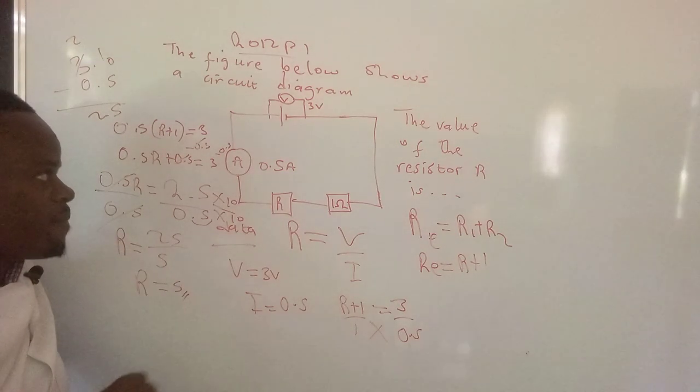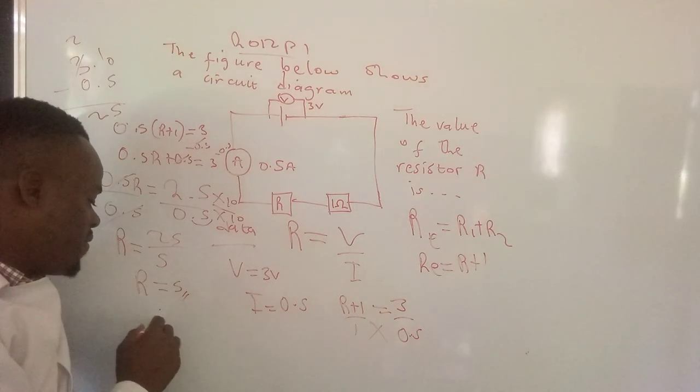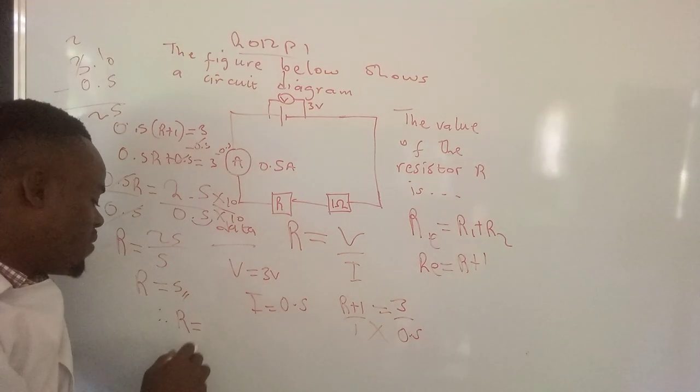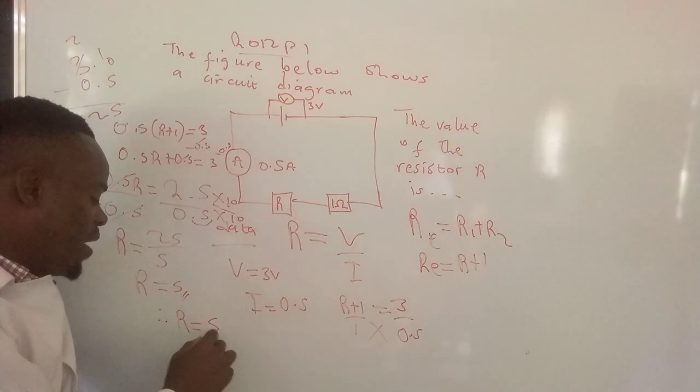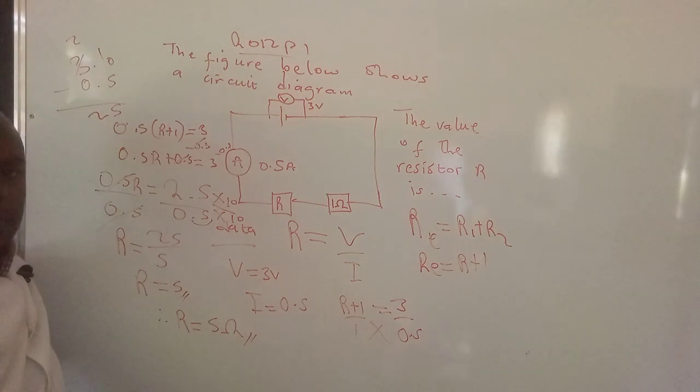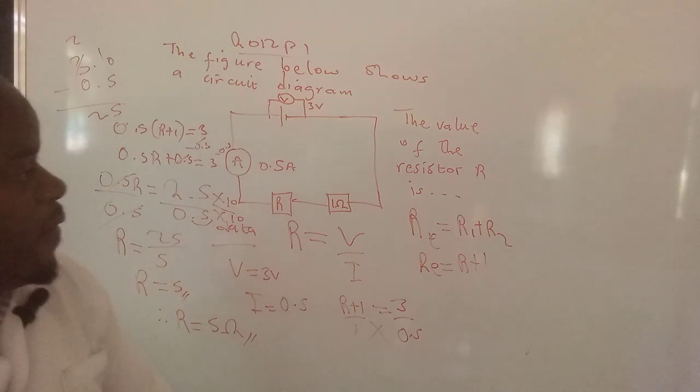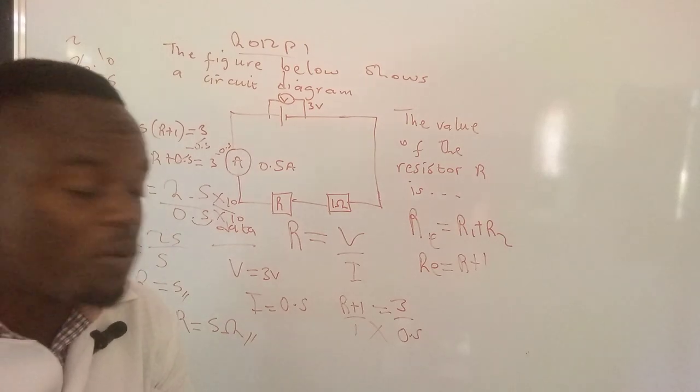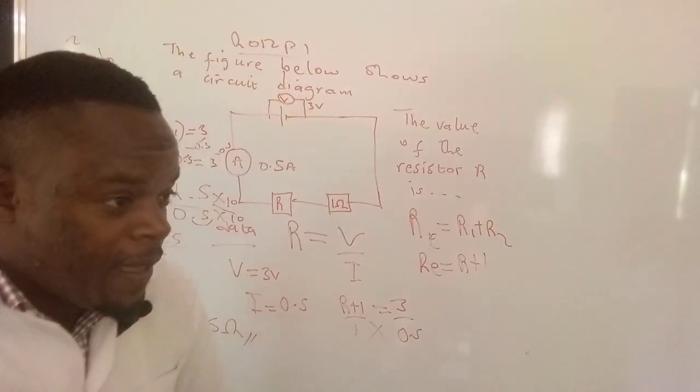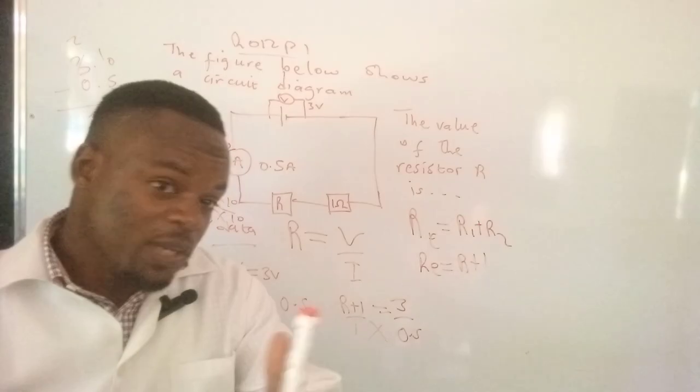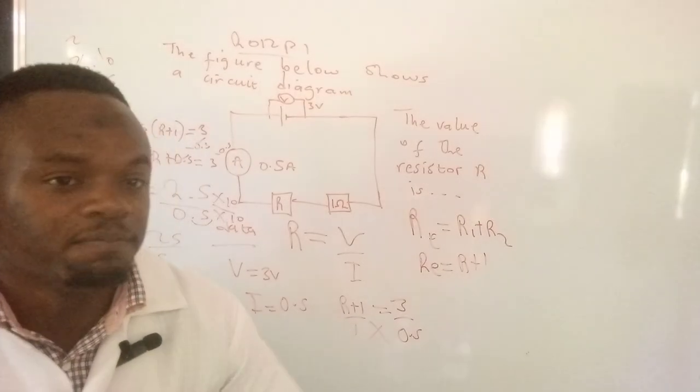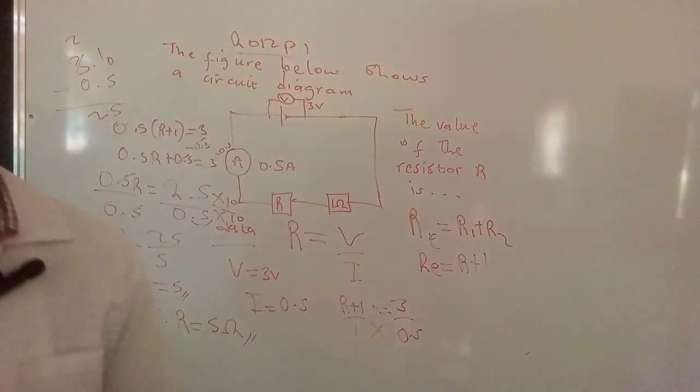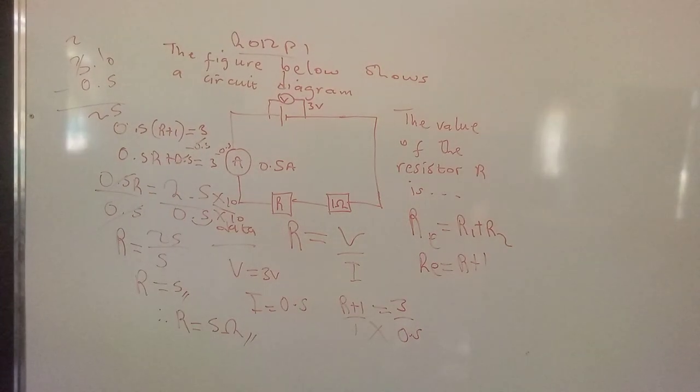So therefore, the value of the resistance of this resistor is equal to 5 ohms. So that's how we go about these things. If you have been helped in one way or another, don't forget to leave a comment in the comment section and don't forget to like the video. Stay blessed, thank you so much.